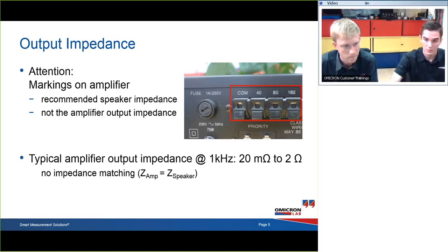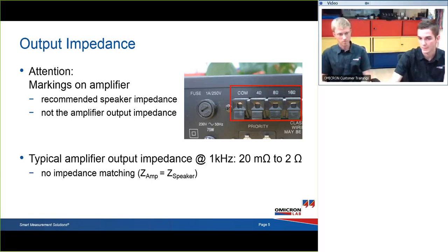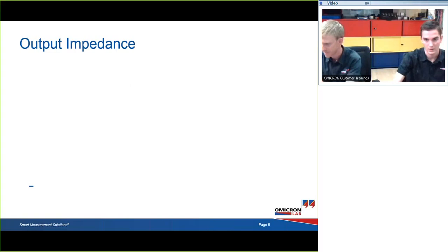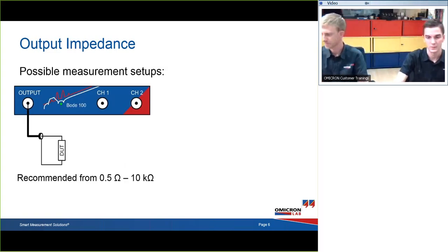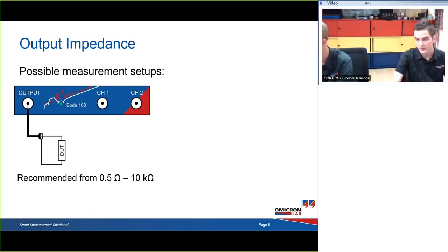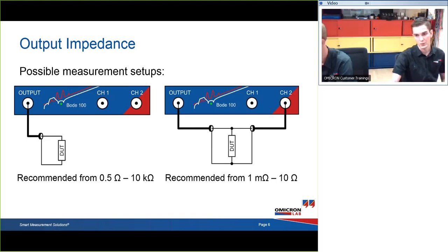There is no impedance matching — the output impedance is not the same as the impedance of the loudspeaker. That's just bridging impedance, meaning the output impedance of the amplifier is always smaller than the impedance of the loudspeaker. There are also two measurement setups: the one-port method, easiest to use, going down to about 0.5 Ω; and if values are lower — approximately 20 mΩ — you have to use the shunt-through method, usable from 1 mΩ to 10 Ω.